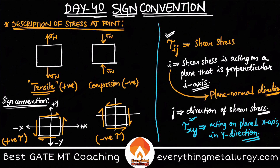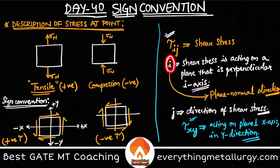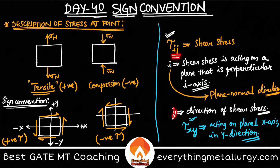Now, one thing many people confuse is about shear stress — how to determine whether it is positive or negative. We usually denote shear stress with tau_ij. What are i and j? These are the different axes. The index i indicates the plane on which the stress acts — it is the plane normal axis, i.e., the direction perpendicular to the plane on which the shear stress is acting.